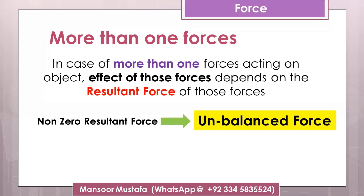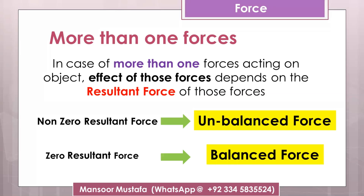Similarly, if you find the resultant of all forces acting on any object and you get a zero resultant, those forces are called balanced forces. This is a key point - exam questions often ask what are balanced and unbalanced forces. Simply: balanced forces are forces which have a resultant of zero, and unbalanced forces are forces which have a non-zero resultant - some value like two, three, or five newtons.